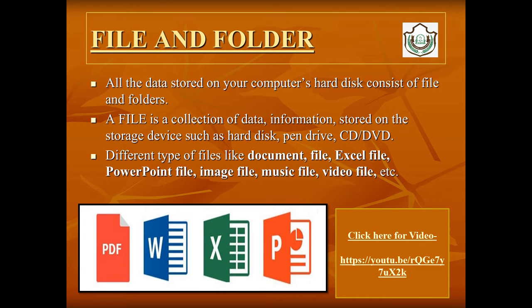A very useful feature of Windows 10 is having folders and different types of files. A file is a collection of data and information stored on a storage device such as a hard disk, pen drive, CD, or DVD. Different types of files include document files, Excel files, PowerPoint files, image files, music files, video files, etc. A folder is a collection of files.